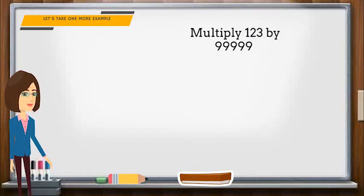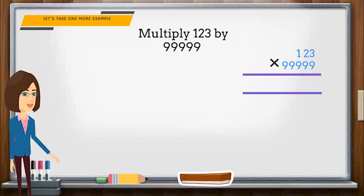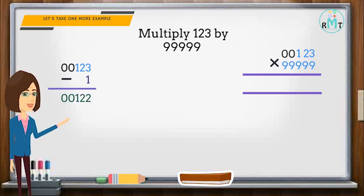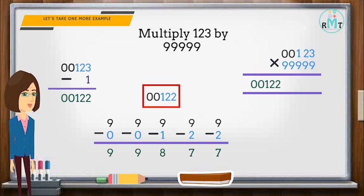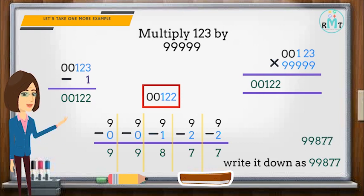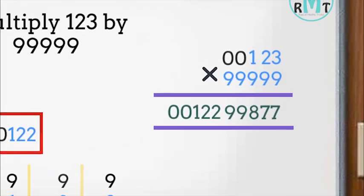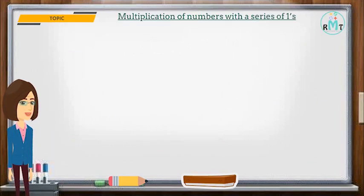Let's take one more example. Multiply 123 by 99999. The multiplicand is a three-digit number and the multiplier is a five-digit number, therefore we add two zeros to the multiplicand so that the digits are equal. Now we subtract 1 from 123, answer is 00122. Next we subtract each of the digits from 9 and write it down as 99877 as the right-hand part of the answer. So the final answer is 00122,99877.